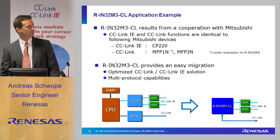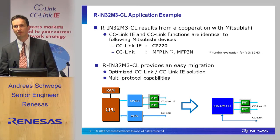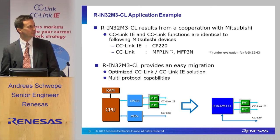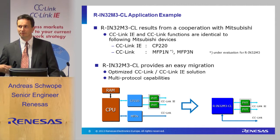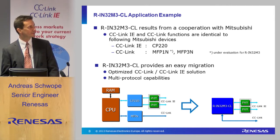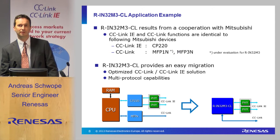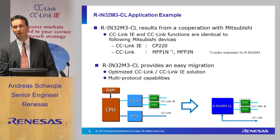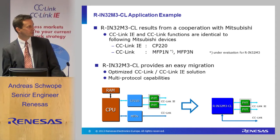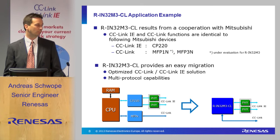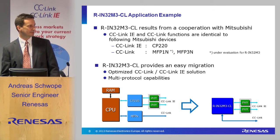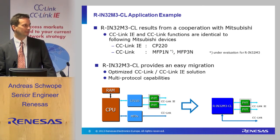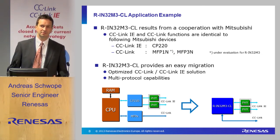The RIN 32M3 CL for CC-Link has been developed in very close cooperation with Mitsubishi in Japan. That's why Mitsubishi had some focus on the internal IP for CC-Link and CC-Link IE, and the internal functions are identical to devices which are already available as ASIC devices. All these are integrated into the RIN devices. This means a design currently built from several components — CPU, CC-Link and CC-Link IE components and so on — can be quite easily migrated to a design which has just a few components.